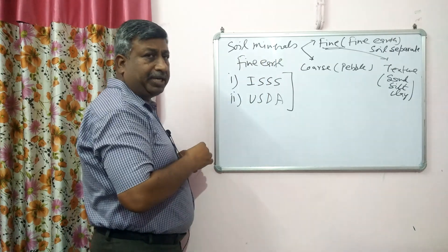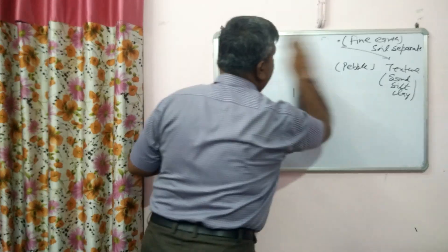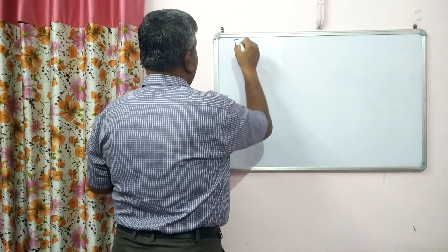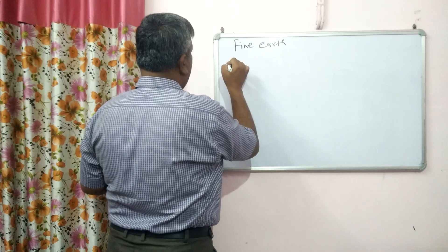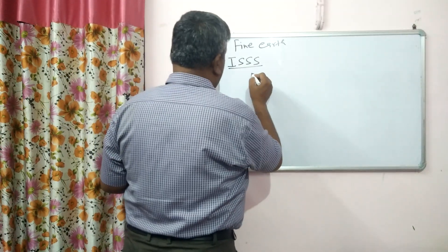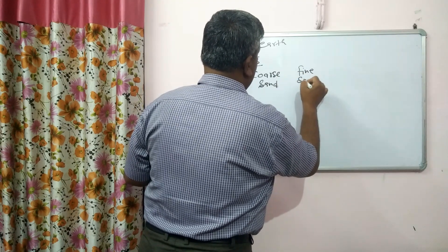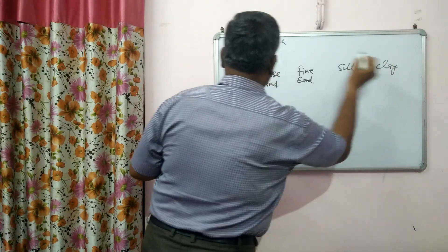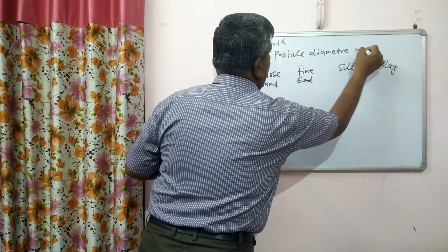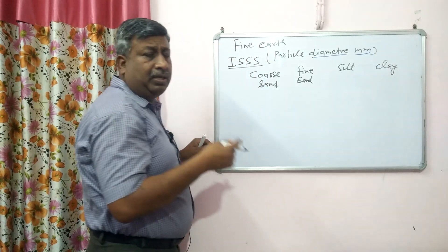Fine earth refers to very small particles. Many questions are asked from this classification. In the case of fine earth, according to the International Society of Soil Science, there are four categories: coarse sand, fine sand, silt, and clay. The measurement is particle diameter in millimeters. Note that this is diameter, not radius, and the classification is in mm — not in meters, not in microns, not in angstroms.